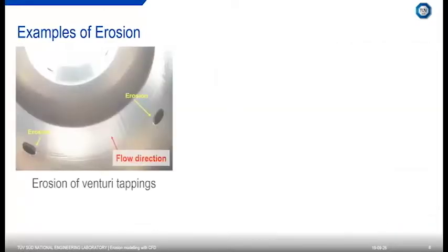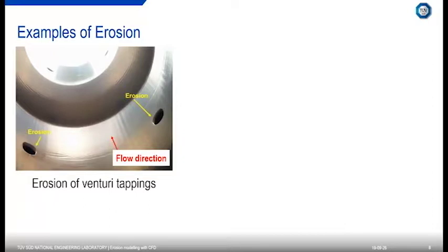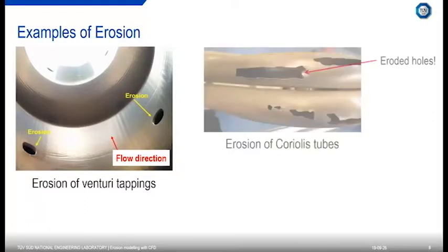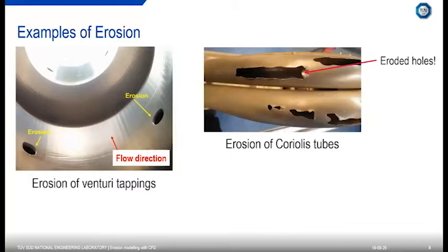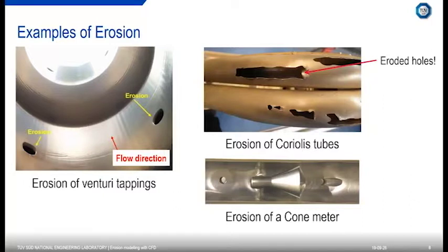Flow metres can also be subject to erosion. Here we have an example of a venturi, with the flow coming through the screen, and we have some erosion happening on the actual tappings. Another example is Coriolis tubes — this has become significantly eroded, similar to the pipe bend, and has actually punctured a hole through both of the tubes. And finally, a cone metre, cut in half so you can see the inside of the pipe plus the cone metre, showing rows of damage especially at the tappings.